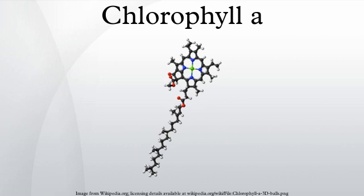Chlorophyll absorbs light within the violet, blue, and red wavelengths while mainly reflecting green. This reflectance gives chlorophyll its green appearance. Accessory photosynthetic pigments broaden the spectrum of light absorbed, increasing the range of wavelengths that can be used in photosynthesis. The addition of chlorophyll B next to chlorophyll A extends the absorption spectrum.